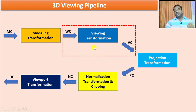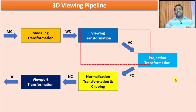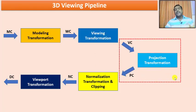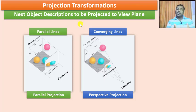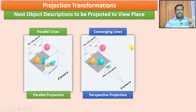This is how the viewing transformation happens. Now we will see how the projection transformation happens, which is the most important task in the entire pipeline. We will focus on this in detail. In projection transformation, the object description is projected to the view plane. The scene moves from world coordinate to screen coordinate, then the projection transformation takes it to the view plane. As discussed earlier, there are two types of projections: parallel projection and perspective projection.